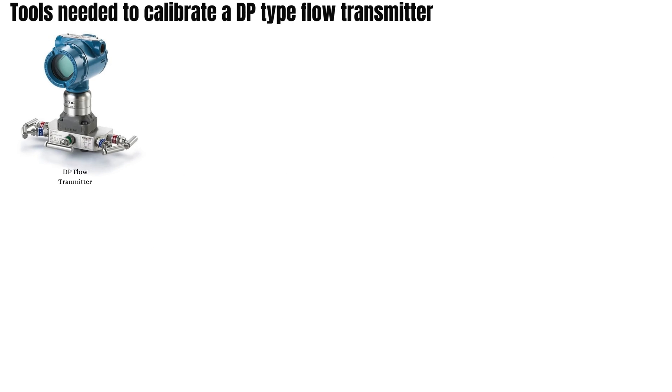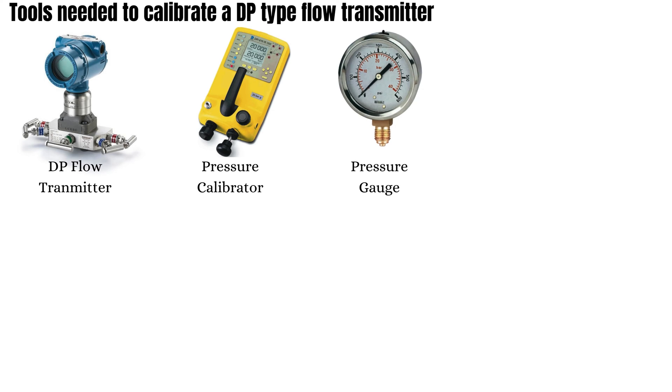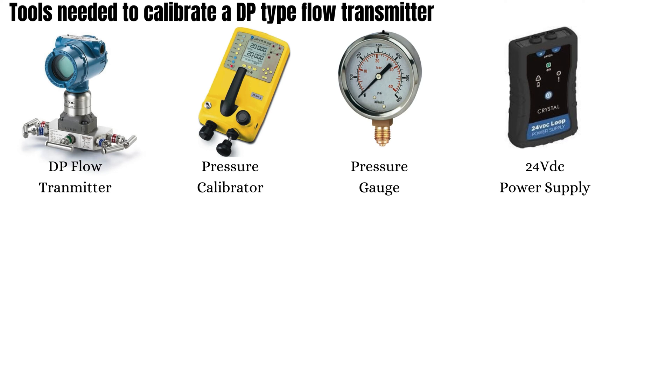What are the tools needed to calibrate a DP type flow transmitter? Besides the DP flow transmitter itself, we will need the below mentioned tools to perform a calibration: a calibrated pressure calibrator capable of indicating pressure in mmH2O, because here the DP transmitter for measuring flow has a range in mmH2O; a calibrated pressure gauge of the appropriate range; and a 24 VDC power supply if the pressure transmitter is not connected to the system and needs an external power supply.